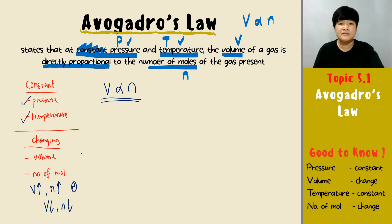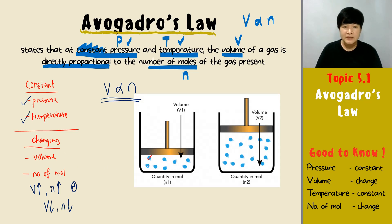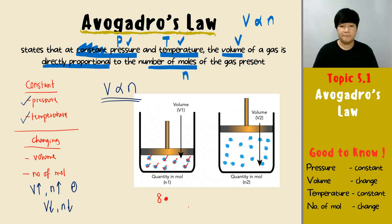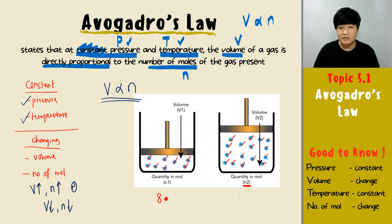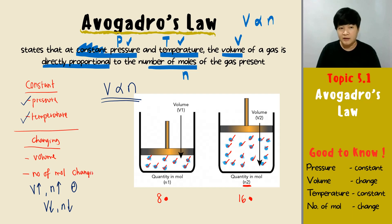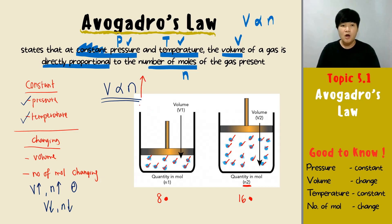Let's look at the number of particles. In your first condition n1, you have 8 particles. In n2, the number of particles increases — you can count and see that you now have 16 particles. That represents the number of molecules changing; the number of molecules is no longer constant.